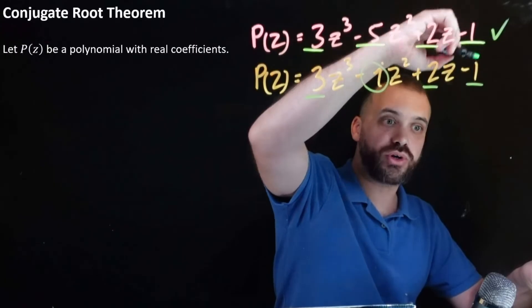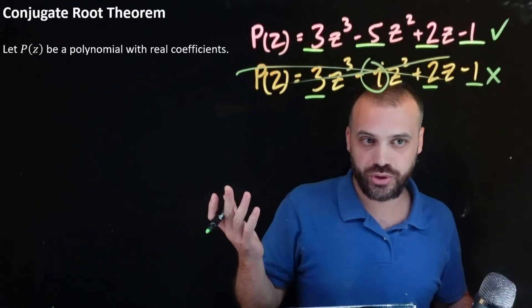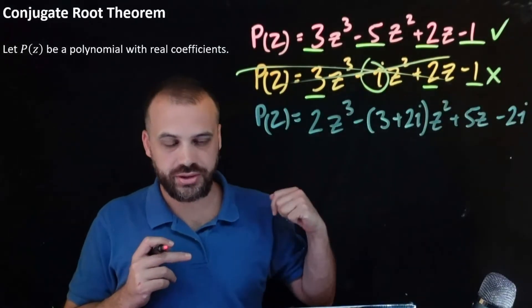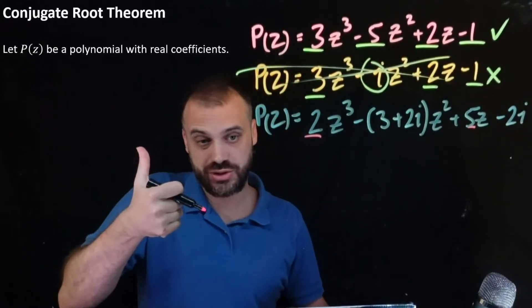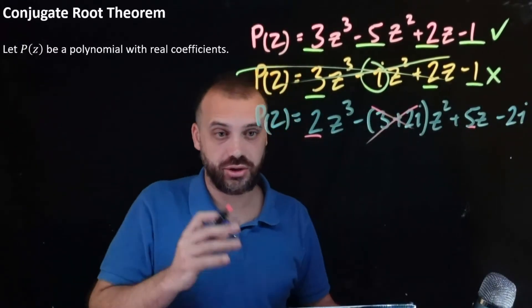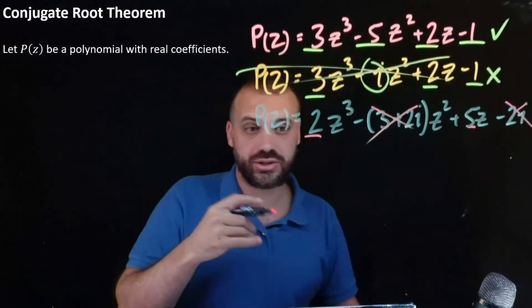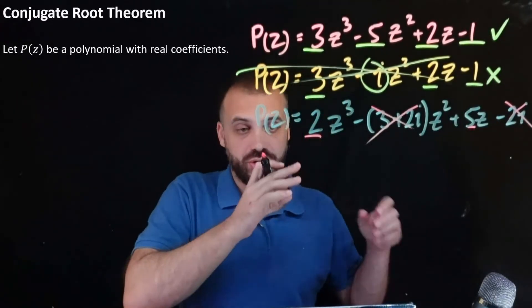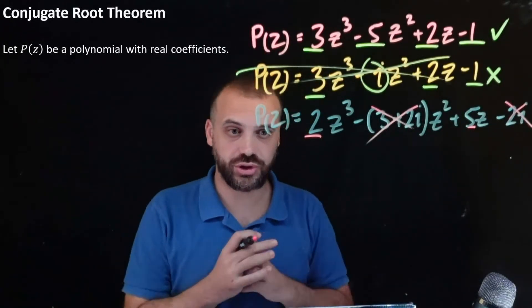So it will work here, but it will not work with this one here. It also won't work with a polynomial that looks like this, and for two reasons. While these are real coefficients, so that's good, this is a complex number, it's not a real coefficient, and this is not a real coefficient. So you need to see all real coefficients before you can use the conjugate root theorem.